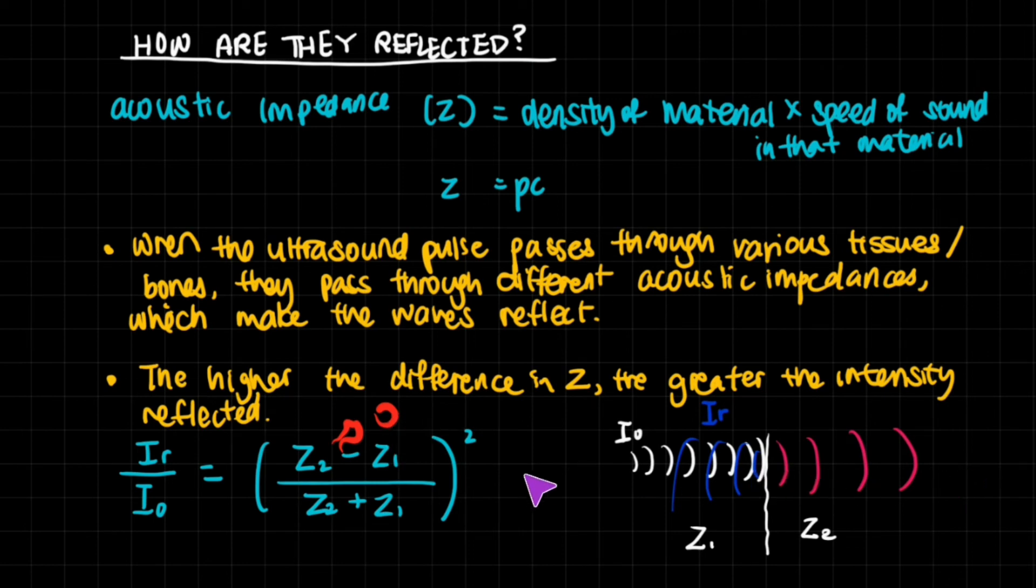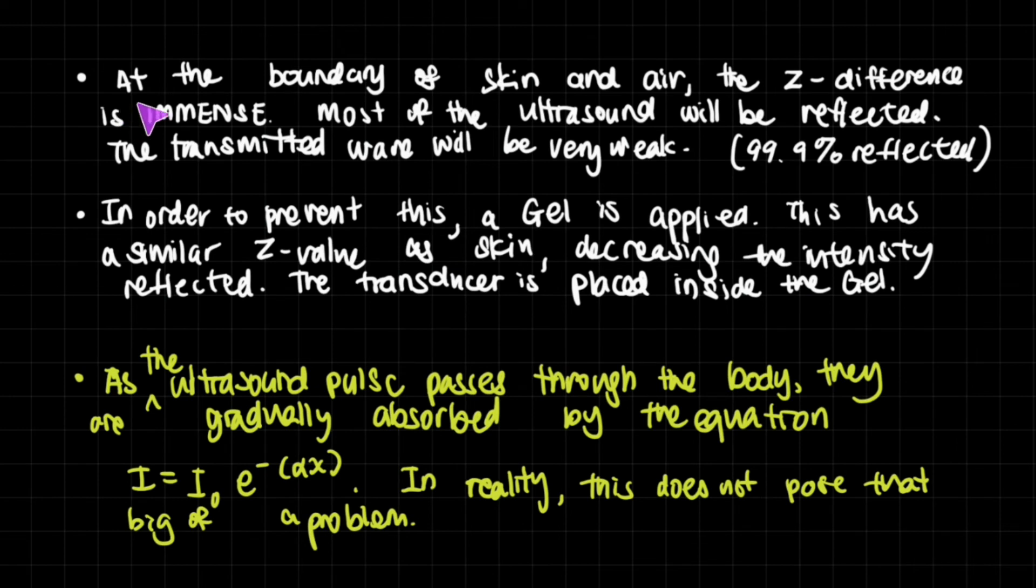At the boundary of skin and air, the Z difference is immense. Air is so much less dense than skin. Most of the ultrasound will be reflected at the boundary of skin and air before it even enters the body. The transmitted wave into the body will be very weak - 99.9% of the ultrasound wave would be reflected at the boundary of skin and air.